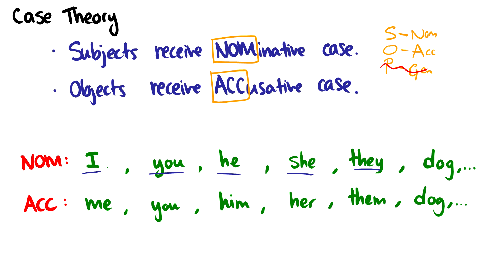Compare that to objects, which get accusative case like me, you, him, her, them, but we can see that just regular nouns, they don't make a difference between whether they're nominative or accusative. They appear the same to us. It's only our pronouns that change. So we can say I as a subject love me as an object, but we can't say something like me love I because our nominative and accusative are mixed up.